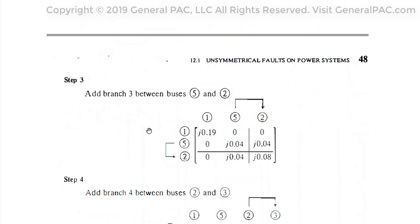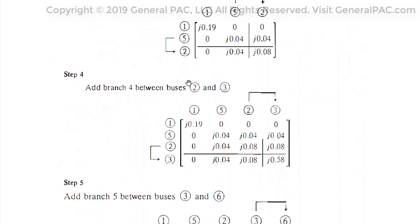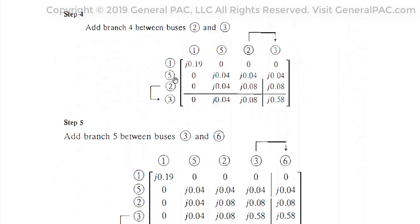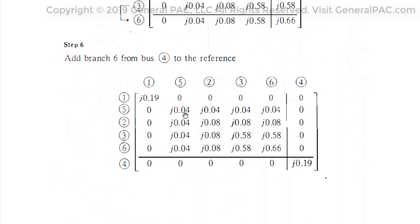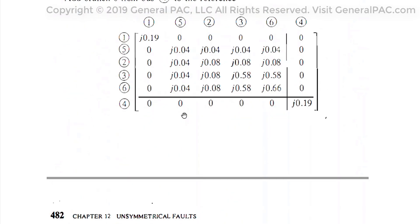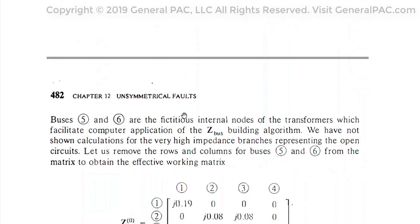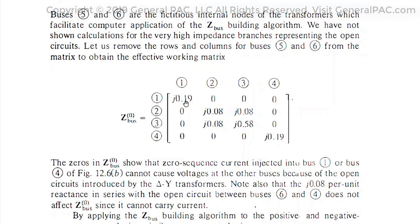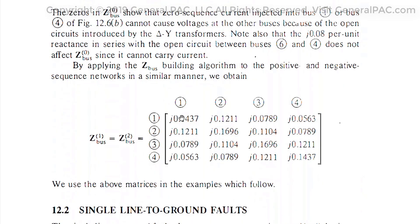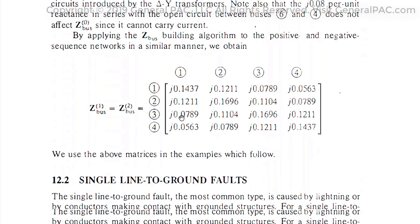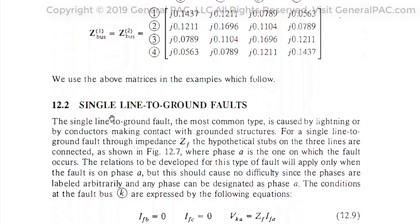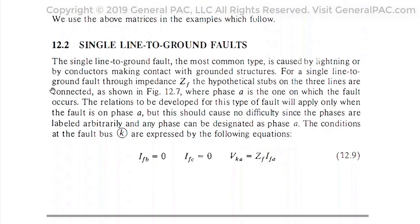It appears the author uses an impedance method, or Z-bus method, to calculate the fault current, and that is not in scope of this particular tutorial. In the next topic, we go into line-to-ground fault, which is much more exciting. Thank you.